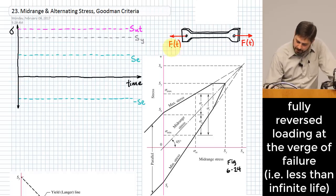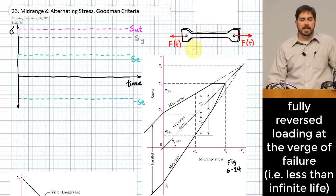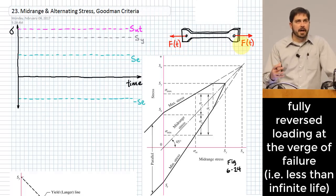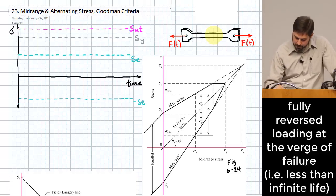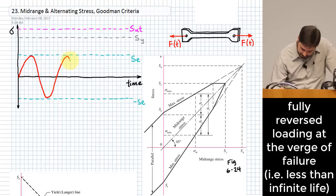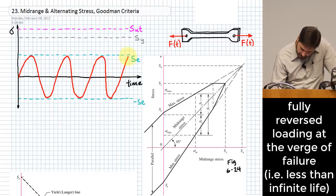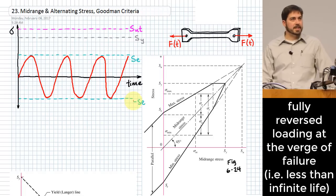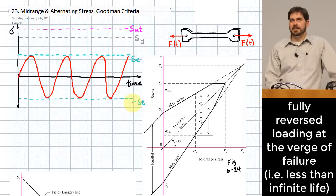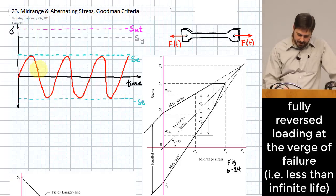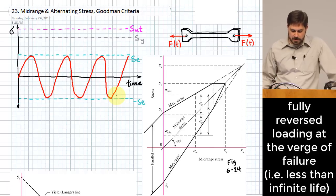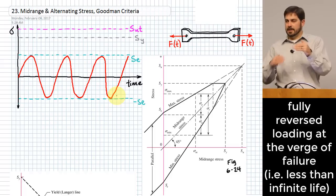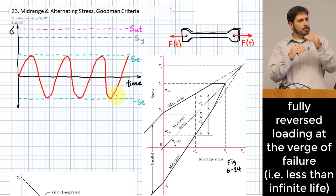The question we're going to answer today is how do you handle situations where the load isn't fully reversed. Fully reversing would be something like this — an axially loaded specimen with a variable load that creates a stress oscillating between two extremes. Those two extremes here are the endurance limit. If this is the fully corrected endurance limit, your part should hypothetically never fail as long as the stress profile stays within those limits.